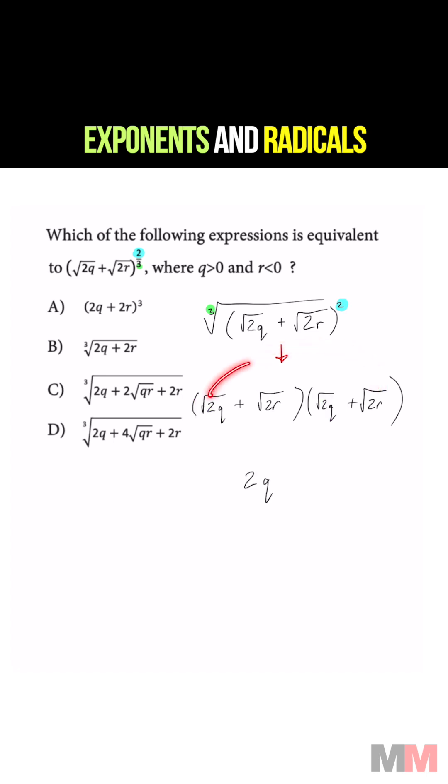When you are multiplying a radical to the same radical, just multiply the expressions in the inside, positive 4qr.